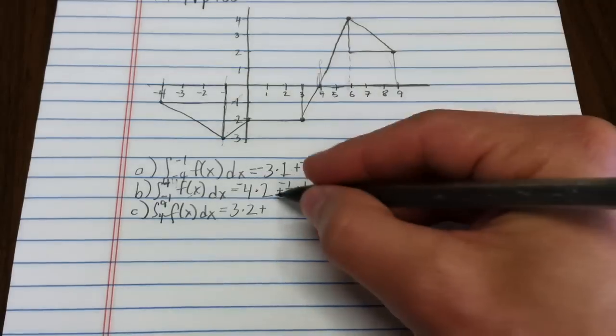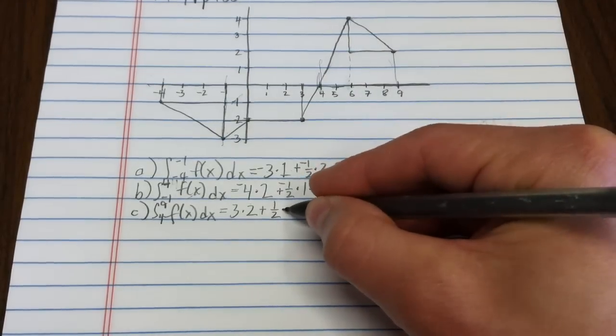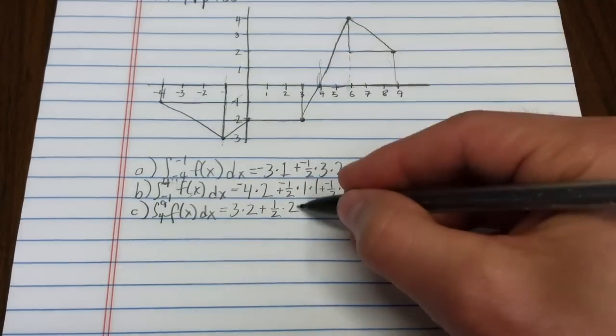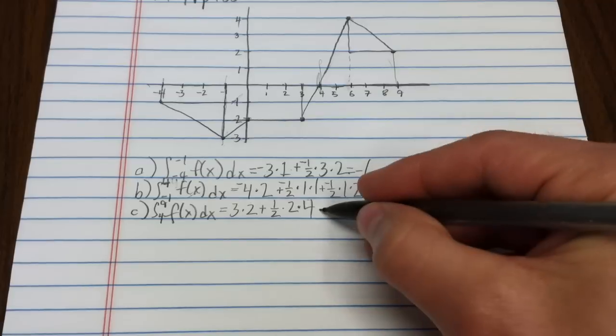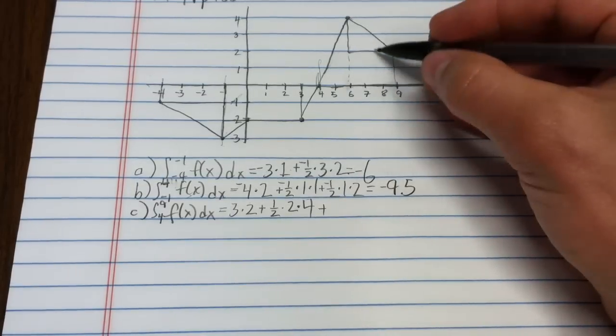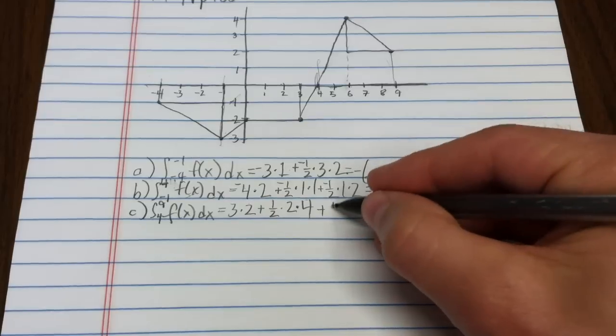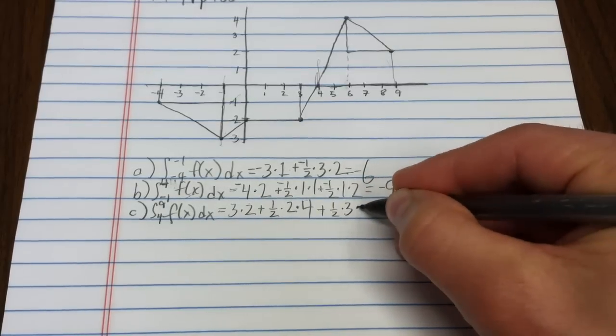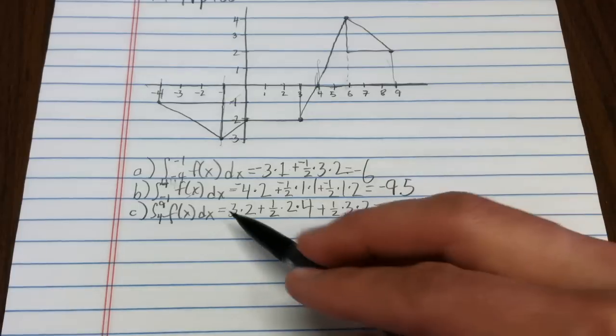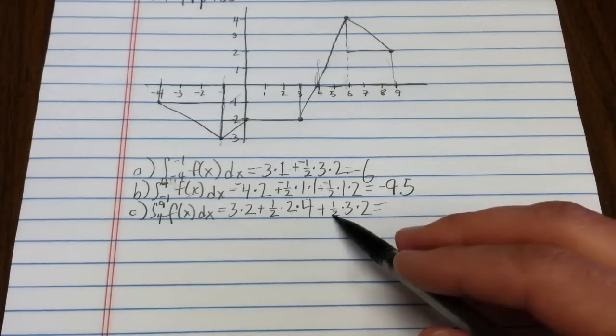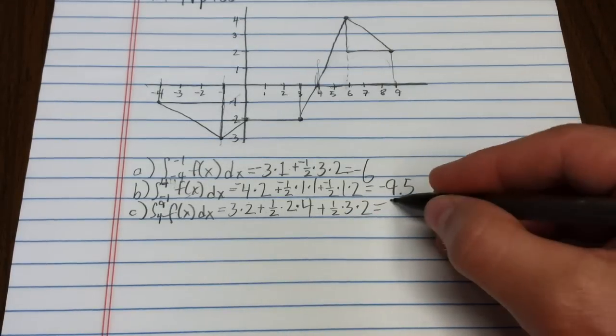This is a triangle, 1 half, base is 2, height is 4, so 6 plus 4. This is a triangle with base 3 and height 2, 1 half times 3 times 2. So I have 6 plus 4 more plus 3, that's 13.